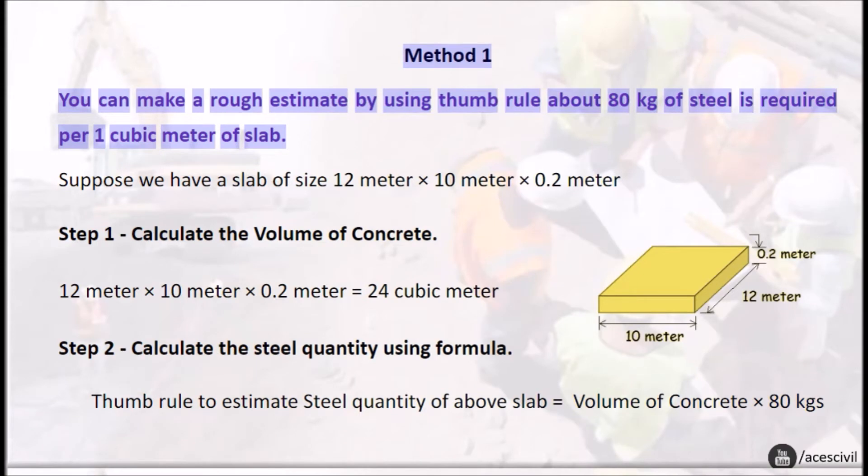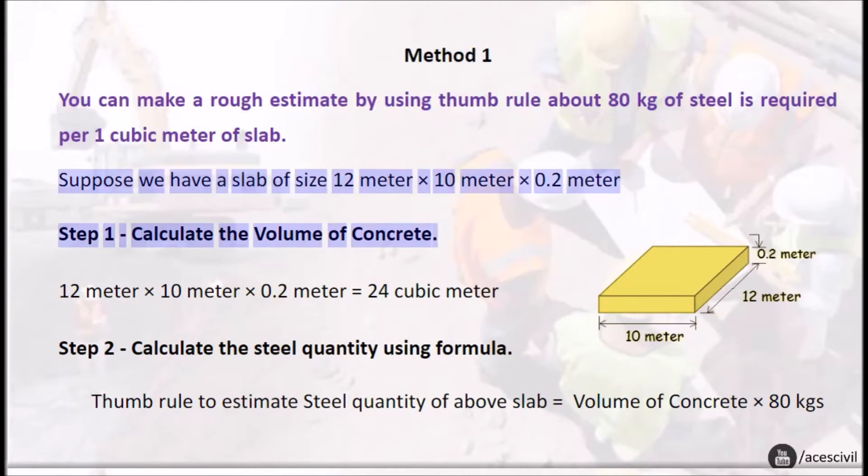Method one: you can make a rough estimate by using thumb rule about 80 kilograms of steel is required per one cubic meter of slab. Suppose we have a slab of size 12 meter times 10 meter times 0.2 meter. Step 1: Calculate the volume of concrete.